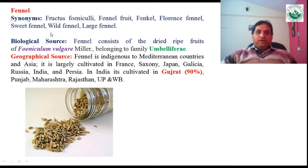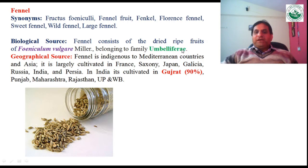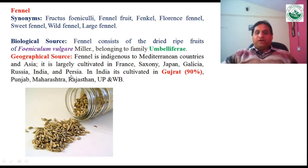The biological source of fennel consists of the dry fruits of Foeniculum vulgare, which belongs to the family Umbelliferae. Its useful part is the fruit. Geographically, it is indigenous to Mediterranean countries and Asia, and is largely cultivated in France, Saxony, Japan, Galicia, Russia, India, and Persia.